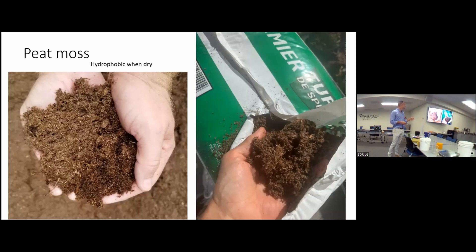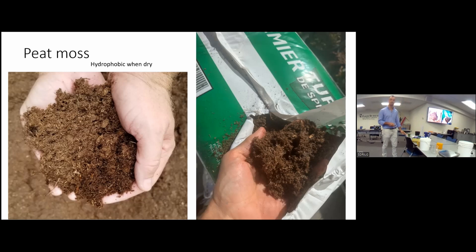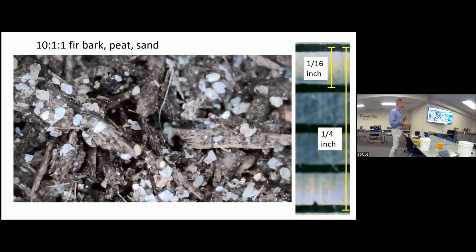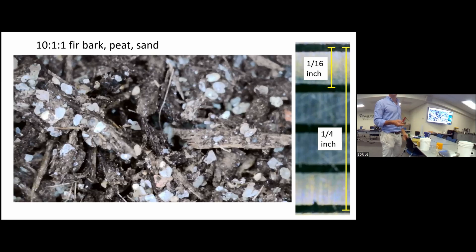Peat moss is hydrophobic when dry — if you put it in water, it floats and really doesn't want to get wet until it sits for several hours. Then when it gets wet, it really doesn't want to get dry. That's in strong contrast with coco coir. This closeup shows a mixture of mostly bark with big pieces, white grains of sand, and smaller fibers from peat. Peat is expensive and bark is cheap, which is why some growers put 10 times more bark than peat, though that creates a very coarse material that drains easily and needs frequent irrigation.